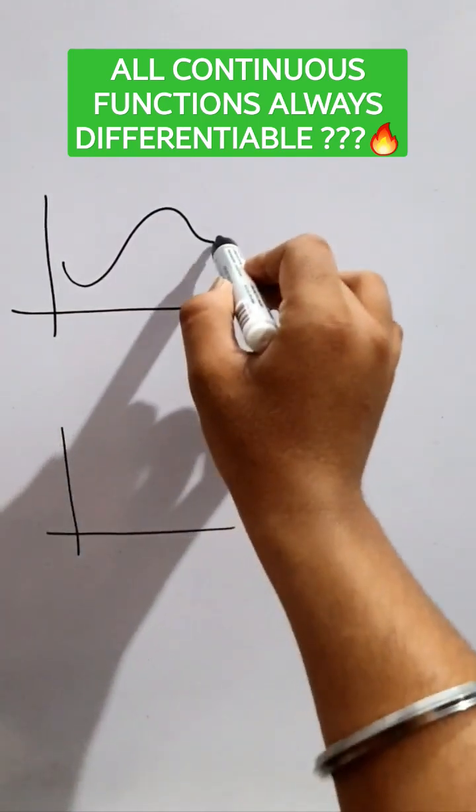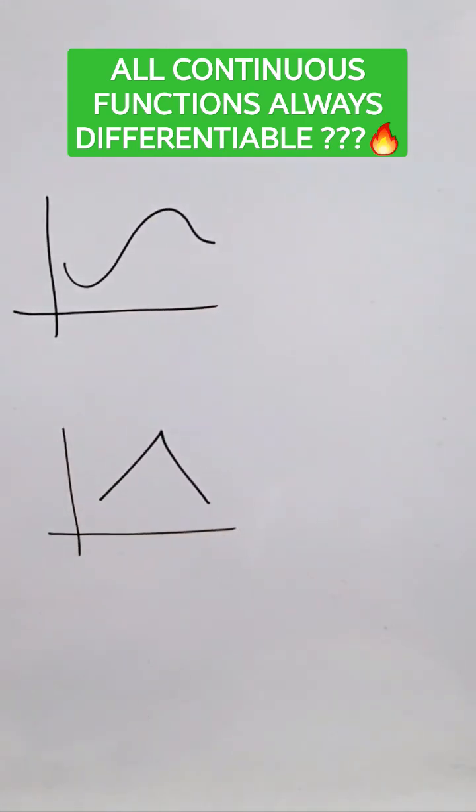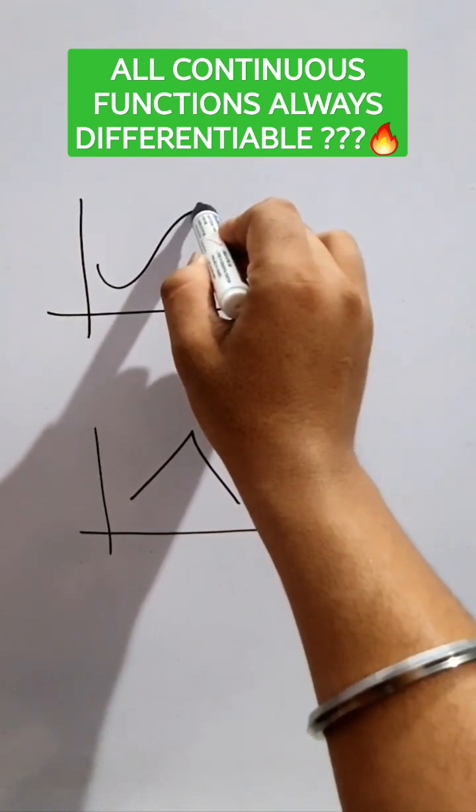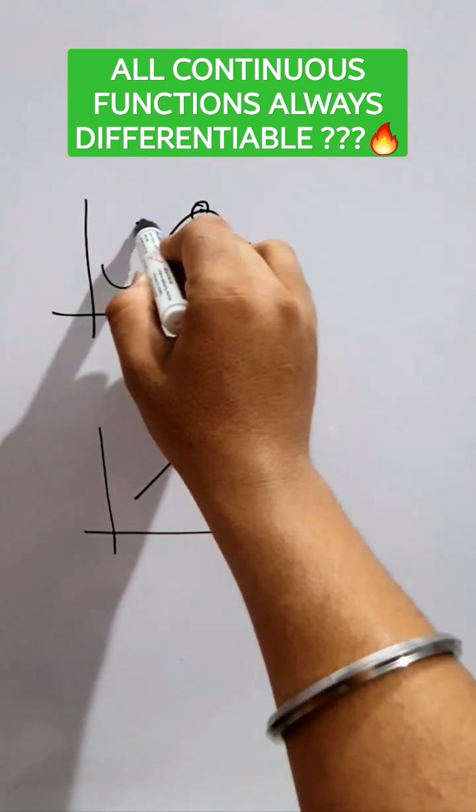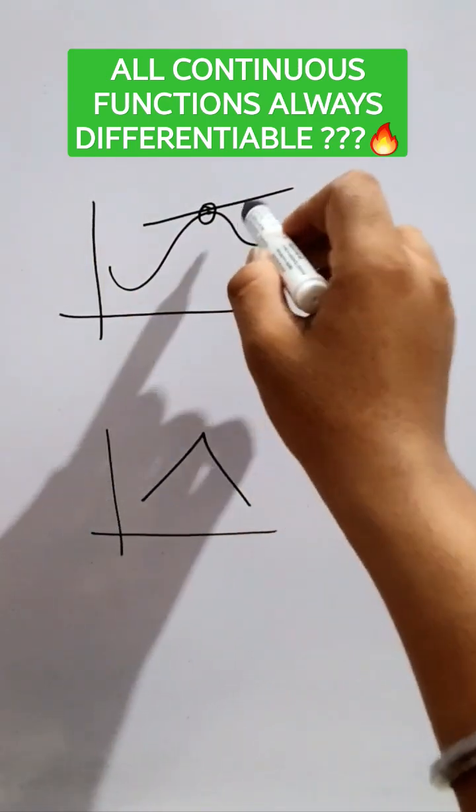We have taken as example this curve and this curve. Both the curves are continuous curves. Now this curve, let's choose a point on the curve and then try to draw a tangent at that point.